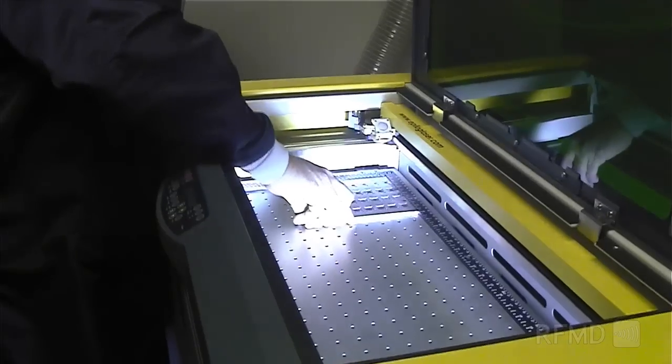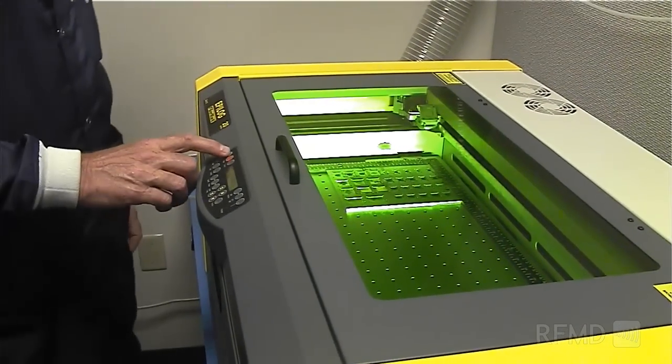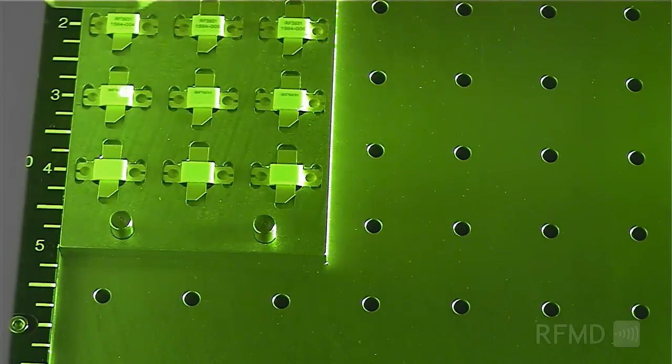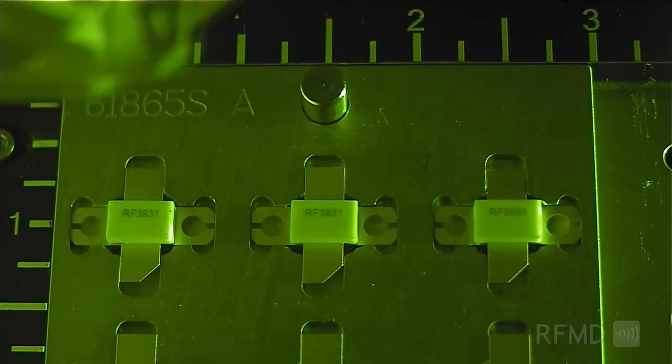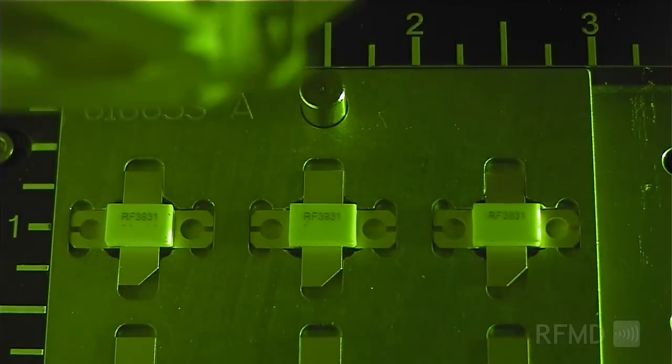Completed packages are moved to a laser marking station where a high-performance laser etching tool adds the RFMD brand, part number, and date code for product traceability. The laser marking stations provide multiple material compatibility including ceramic, carbide, co-bar, and other materials. Flexibility in the laser marking equipment allows for customized marking where required by customers.